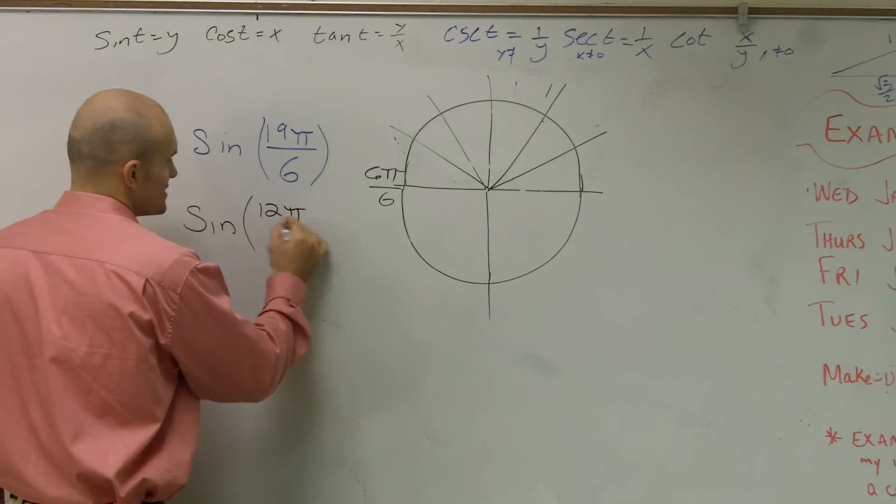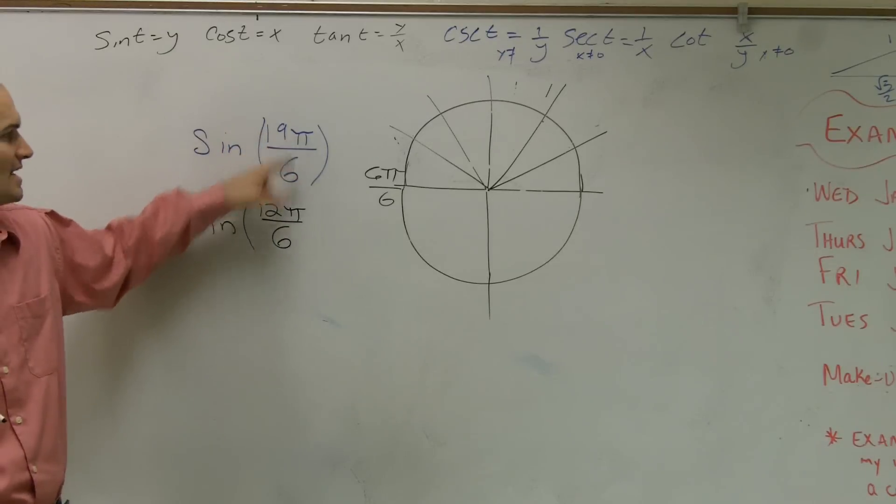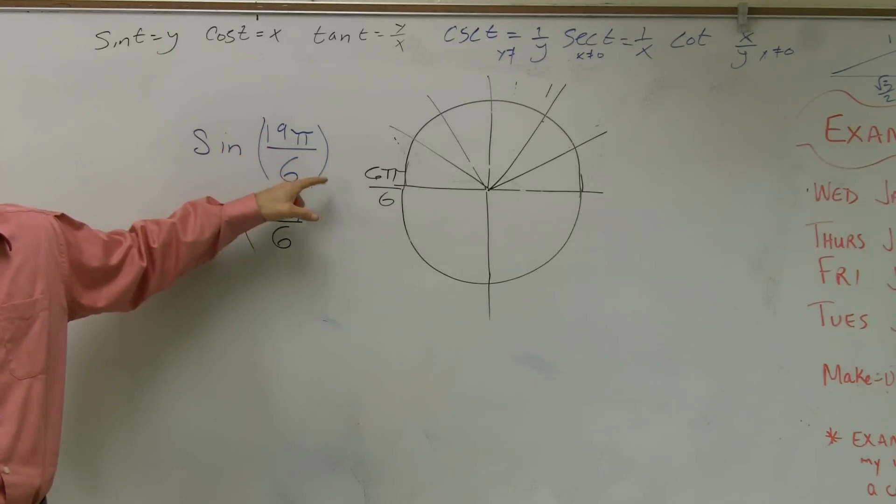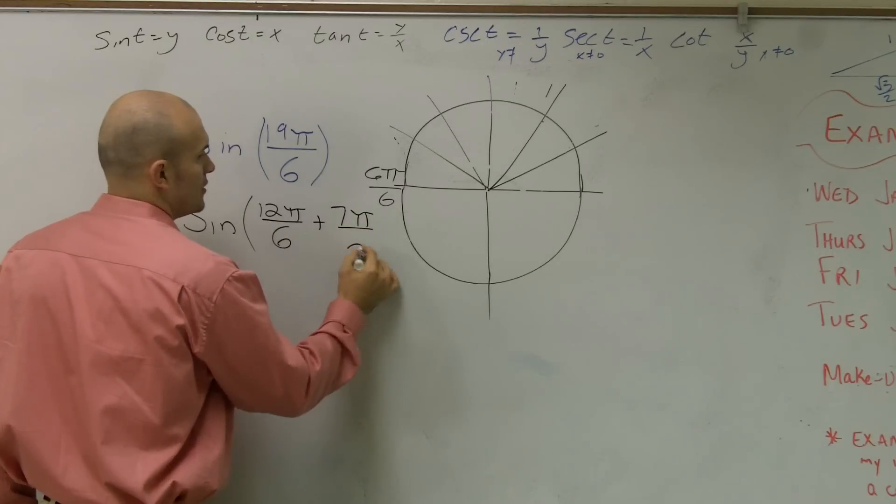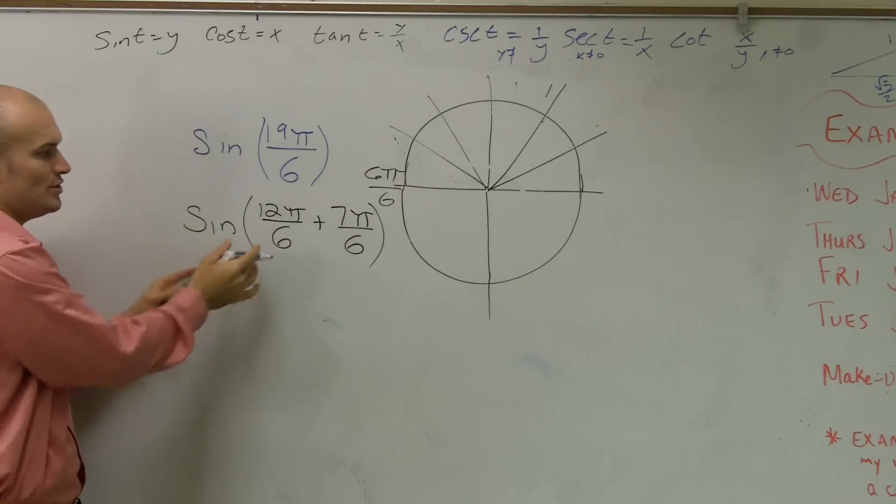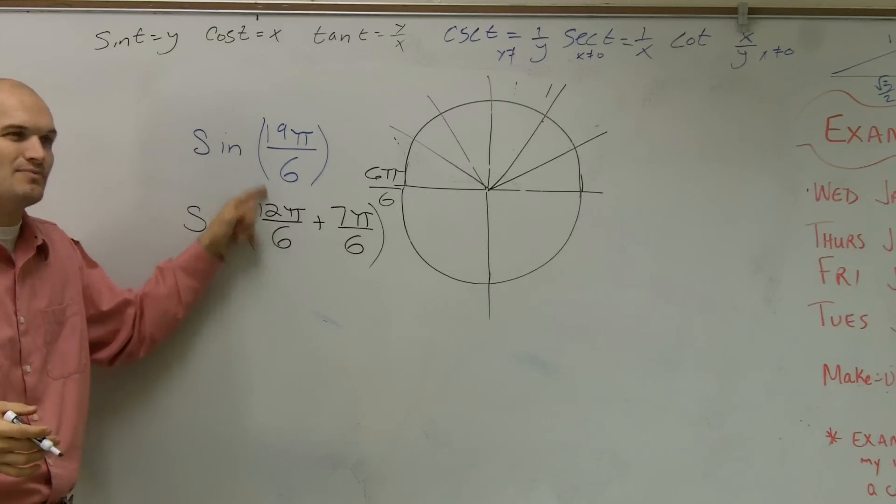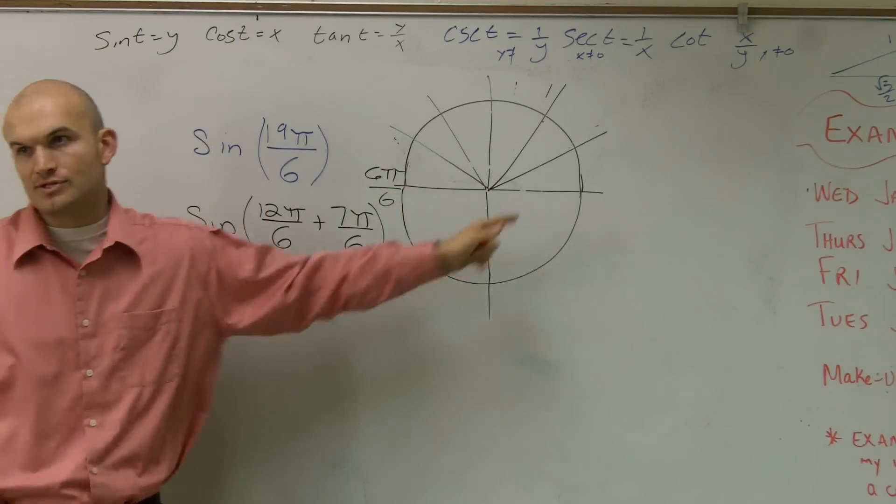So if I say 12π over 6, then what else would I have to add to 12π over 6 to get 19π over 6? I think I said you could add 7π over 6. Well, like we said, when you use a period, what you're doing is we really don't care about this. This is just taking us all the way around the circle.